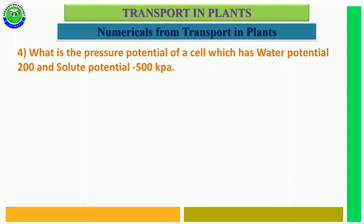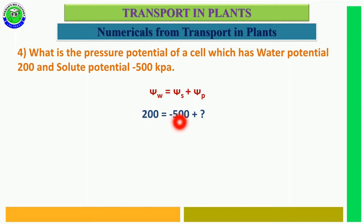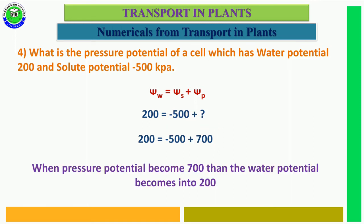Question number 4. What is the pressure potential of a cell that has water potential 200 kPa and solute potential minus 500 kPa? Using the formula ψW = ψS + ψP: 200 = minus 500 + ψP, so the pressure potential becomes 700 kPa, which gives a water potential of 200.